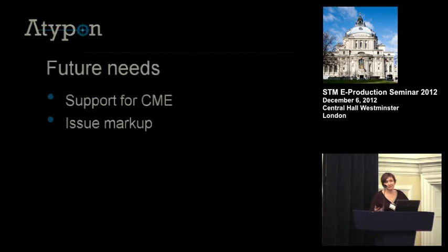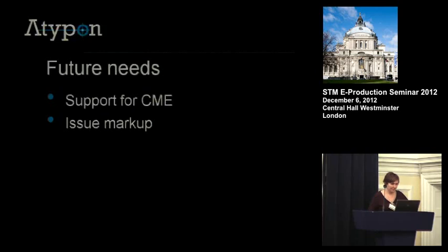Issue markup is another thing that we've always required but is not part of the JATS standard. You can go either way on that. The argument against having issue-level XML is that it's an artifact of print and it's going to go away, especially in the STM world, pretty soon. Also, JITS isn't really as nice an acronym as JATS.